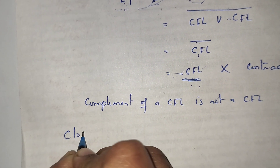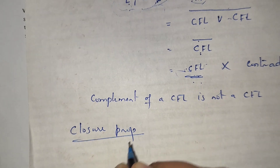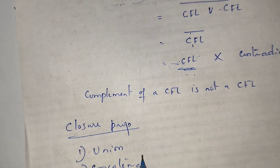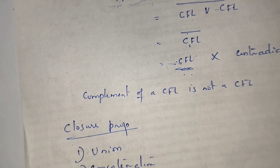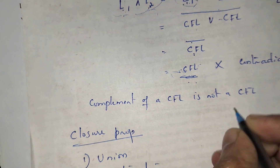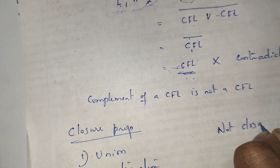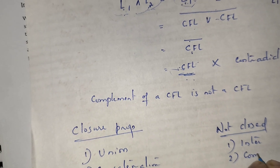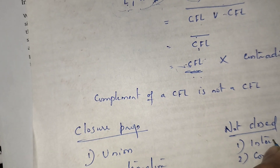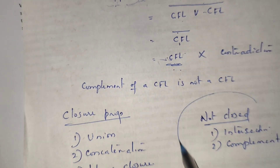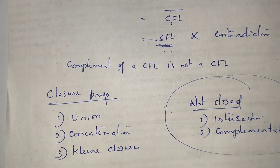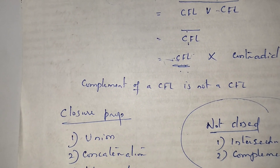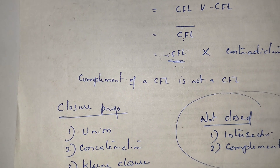In summary, the closure properties of context-free languages are: closed under union, concatenation, and Kleene closure; but NOT closed under intersection and complementation. This is important for GATE examinations — they may ask whether intersection or complementation of context-free languages is context-free. The answer is no: intersection and complementation are not closed under context-free languages.